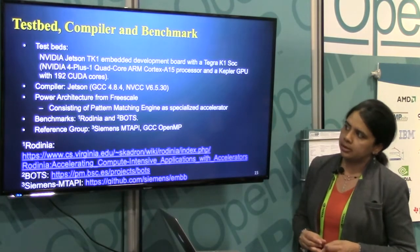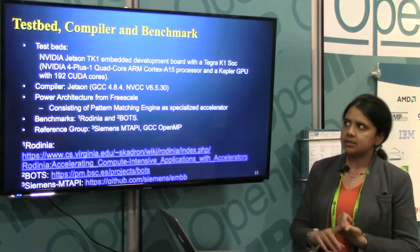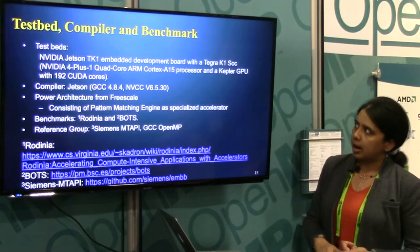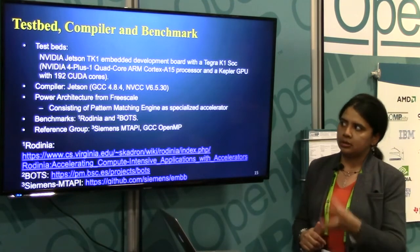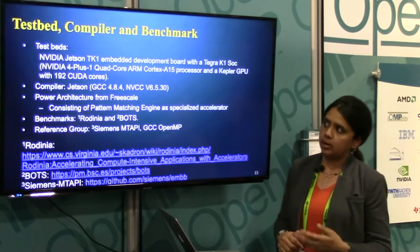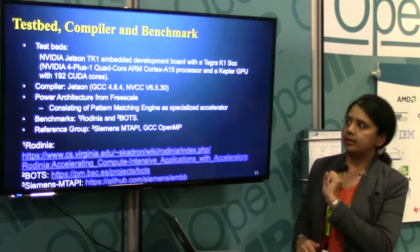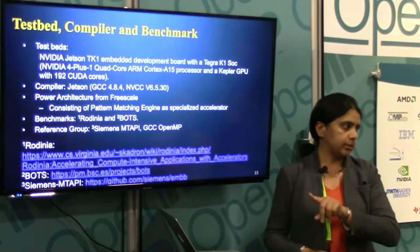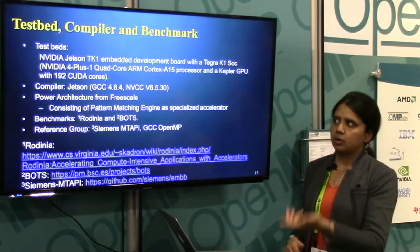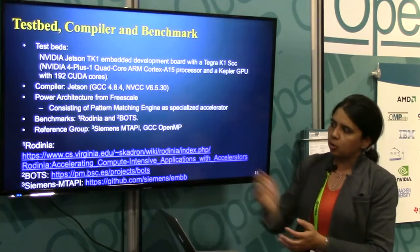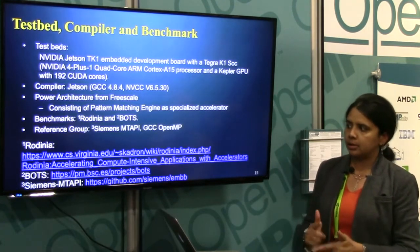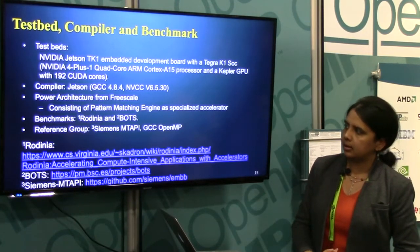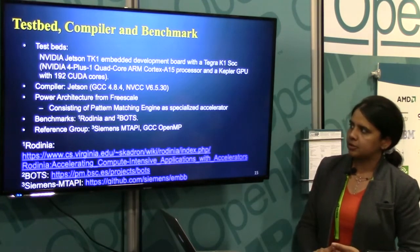Target platforms included x86 first, then an NVIDIA Jetson TK1 with a quad-core ARM processor and a Kepler GPU. Preliminary work was done on the Power Architecture from Freescale and its pattern matching engine, which was a specialized bare-metal accelerator with no OS — we had to dive into the hardware directly from the software stack. Benchmark codes used were the conventional ones: Rodinia, BOTS — Barcelona Tasking test codes — and Siemens MTAPI implementation, with GCC OpenMP for evaluation comparison.